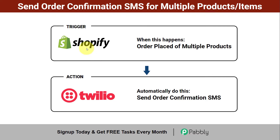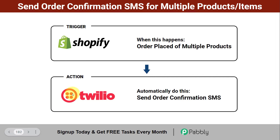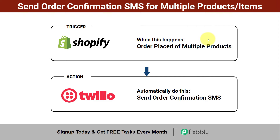Using Shopify, one can create their own online store, and using Twilio, one can also send SMS. There is no direct connection between these applications, so with the help of an automation software, we will be integrating these applications so that whenever an order is placed for multiple products, an order confirmation SMS will be sent to the customer automatically. Come with me and I will show you everything step by step.